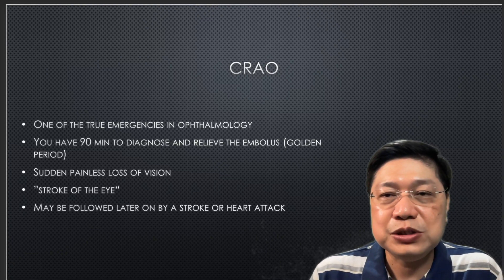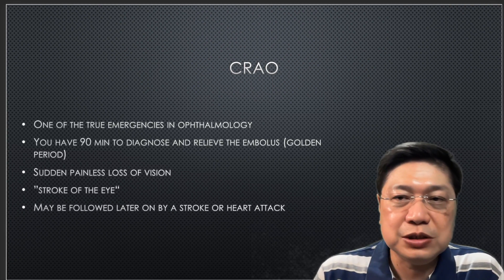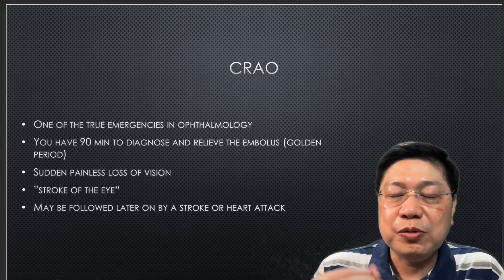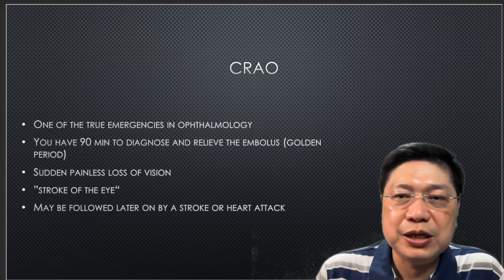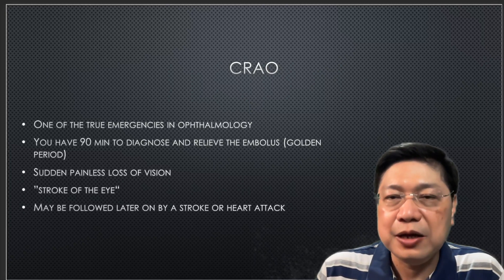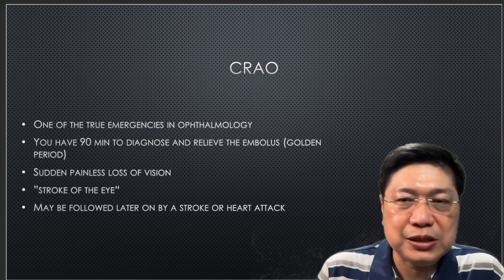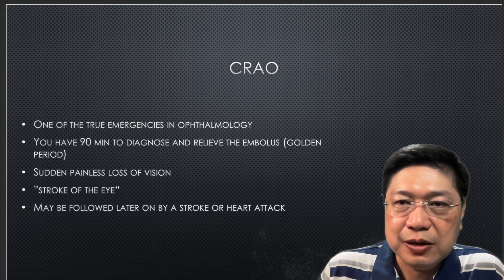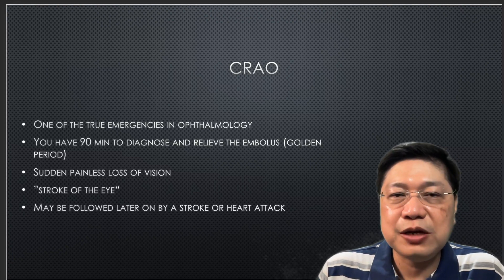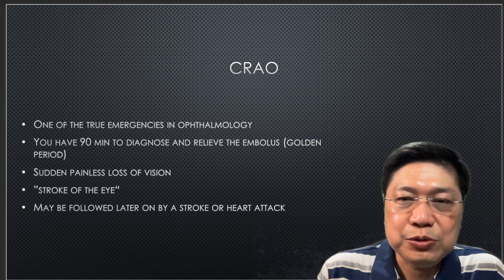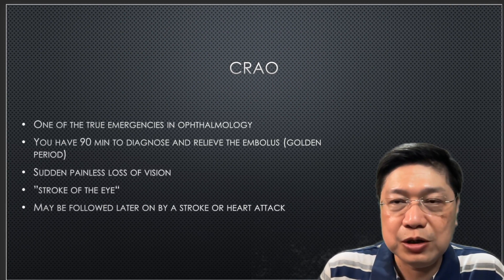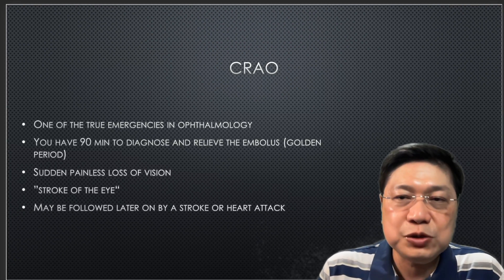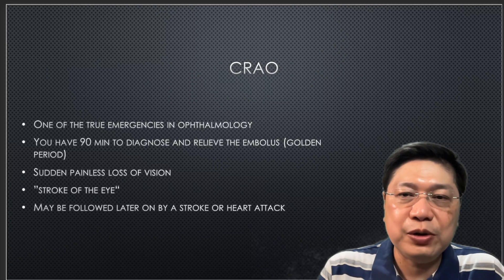CRAO is usually due to an embolus in the central retinal artery — that's why it's considered a stroke of the eye. Your patient will tell you there's sudden, very severe loss of vision from something they were seeing clearly, and then within a few minutes everything is either blurred or black. Most of the time they can still see light but it's very blurred and it happened very quickly. It may be followed later by a stroke or an actual heart attack. So if you have a patient with CRAO, aside from trying to relieve the embolus, please refer them to a cardiologist or neurologist, because some of these patients will eventually have a stroke or heart attack if their systemic condition is ignored.